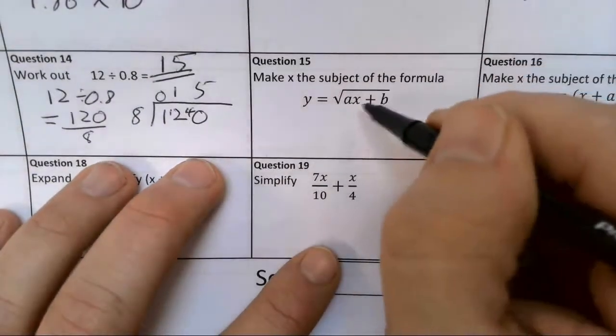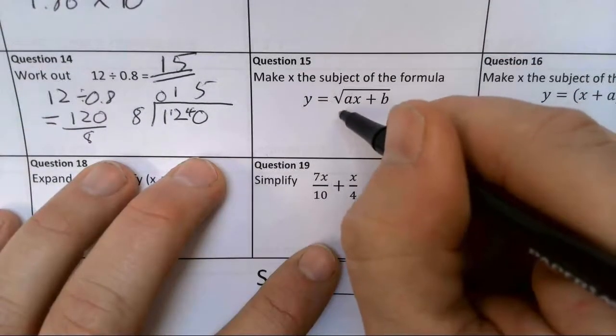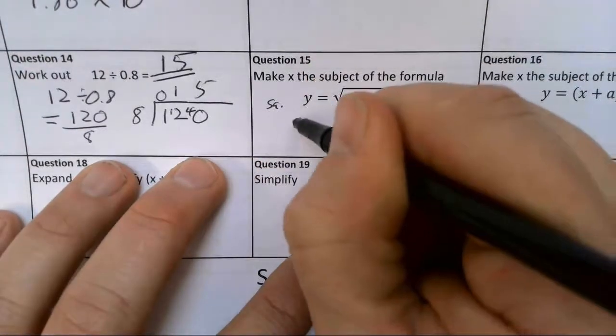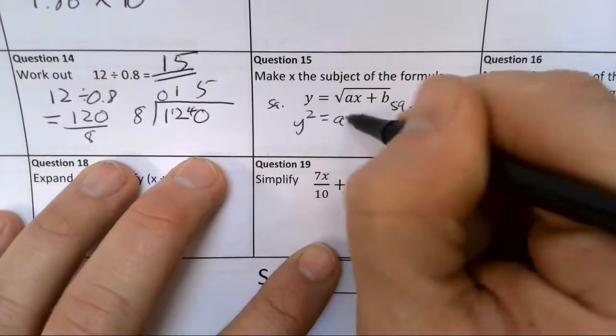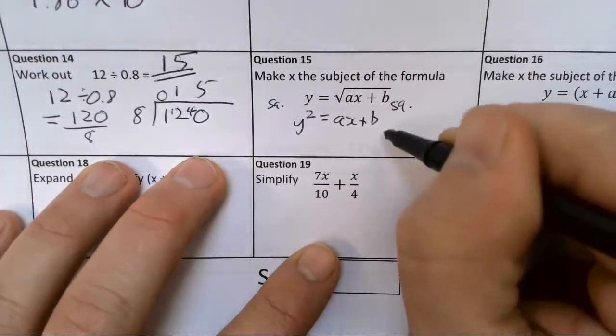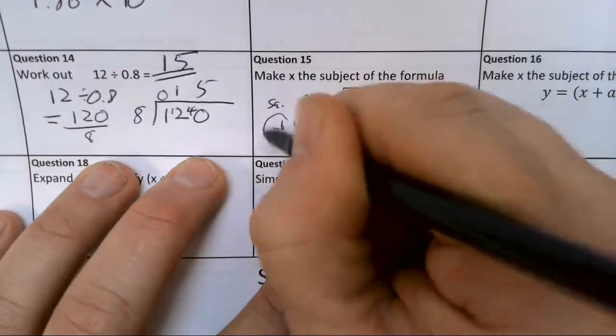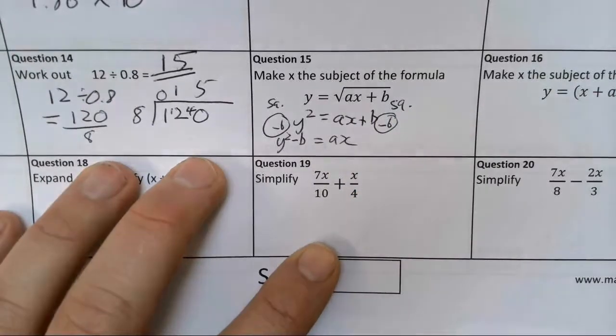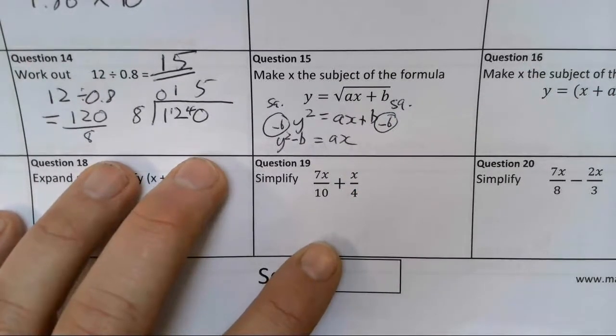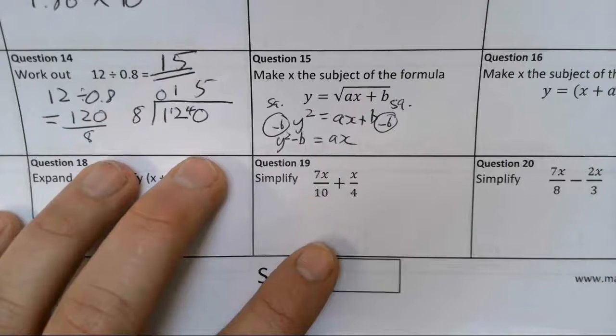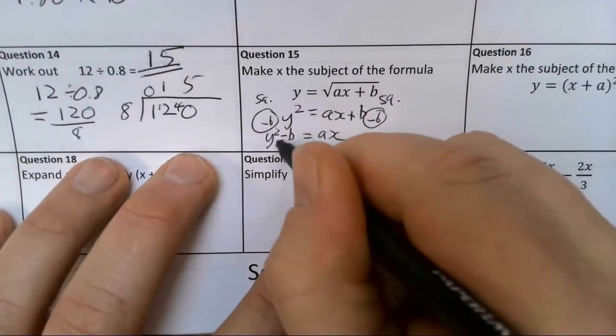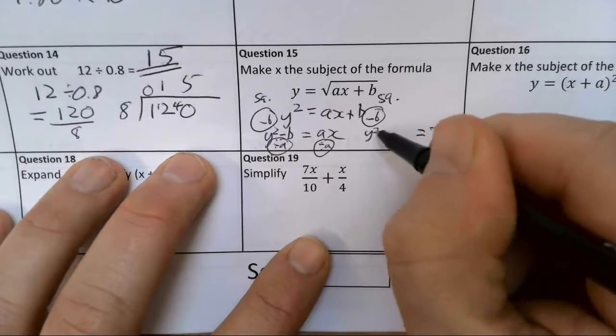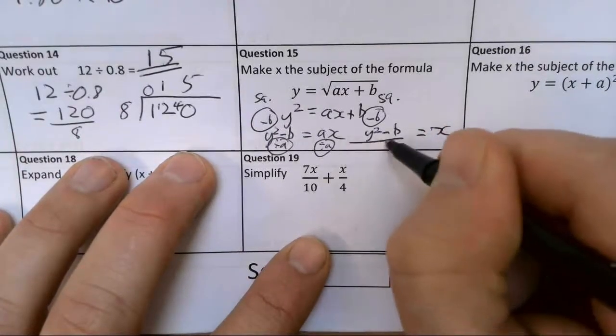Changing the subject of a formula. First thing I need to do to get x on its own is to square both sides. So I'm going to square this side, I'm going to square this side. I've got y squared equals ax plus b. Next thing I'm going to do, I'm going to take away b from both sides. So I've got y squared minus b equals ax. And my last thing to do is to then divide everything by a. So I'm going to divide this by a and divide that by a, and that gives me x equals y squared take away b all over a.